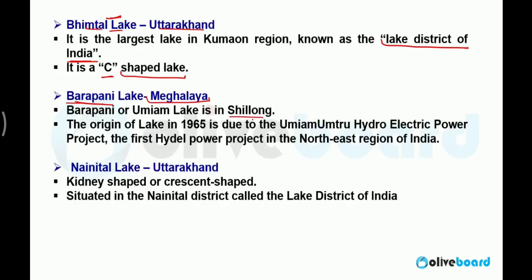Barapani Lake is situated in Meghalaya, in Shillong. It is an artificial lake, formed in the year 1965 through the Umiam hydroelectric power project, which was the first hydroelectric power project of the northeast region of India.